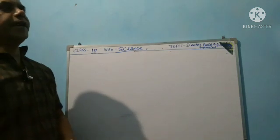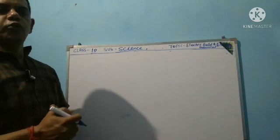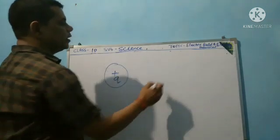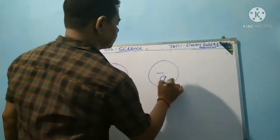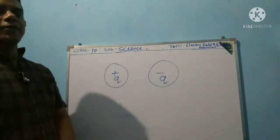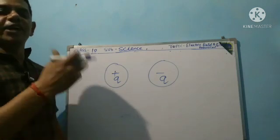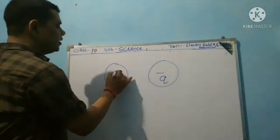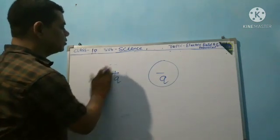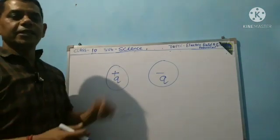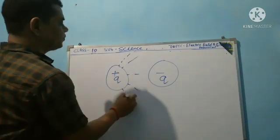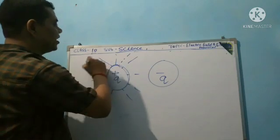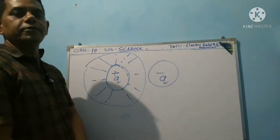Field means that region which is generated around a charge. So a region around a charged particle or object within which a force would be exerted on other particles or objects — that is called Electric Field.